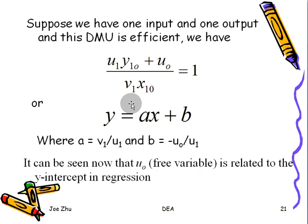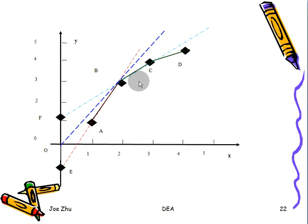As you can see, this is a line. This is the intercept, this is the slope. That's why if you look at the VRS frontier, if you extend the line up here, you get an intercept here, a negative one. If you extend this line over here, you get an intercept which is positive.